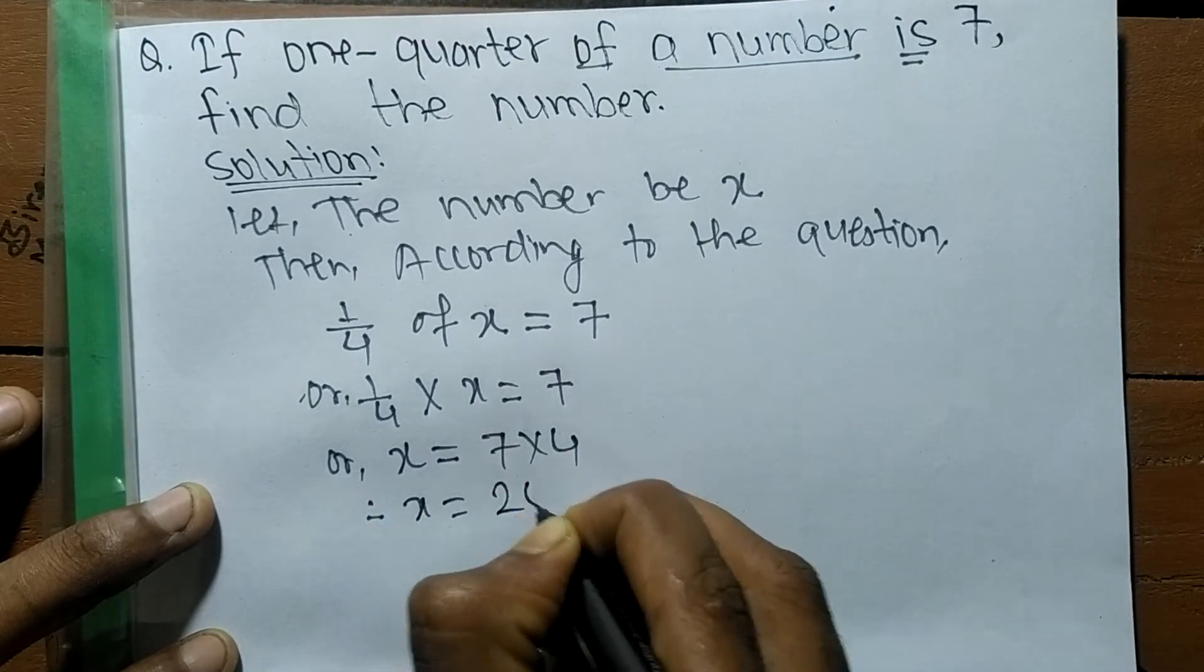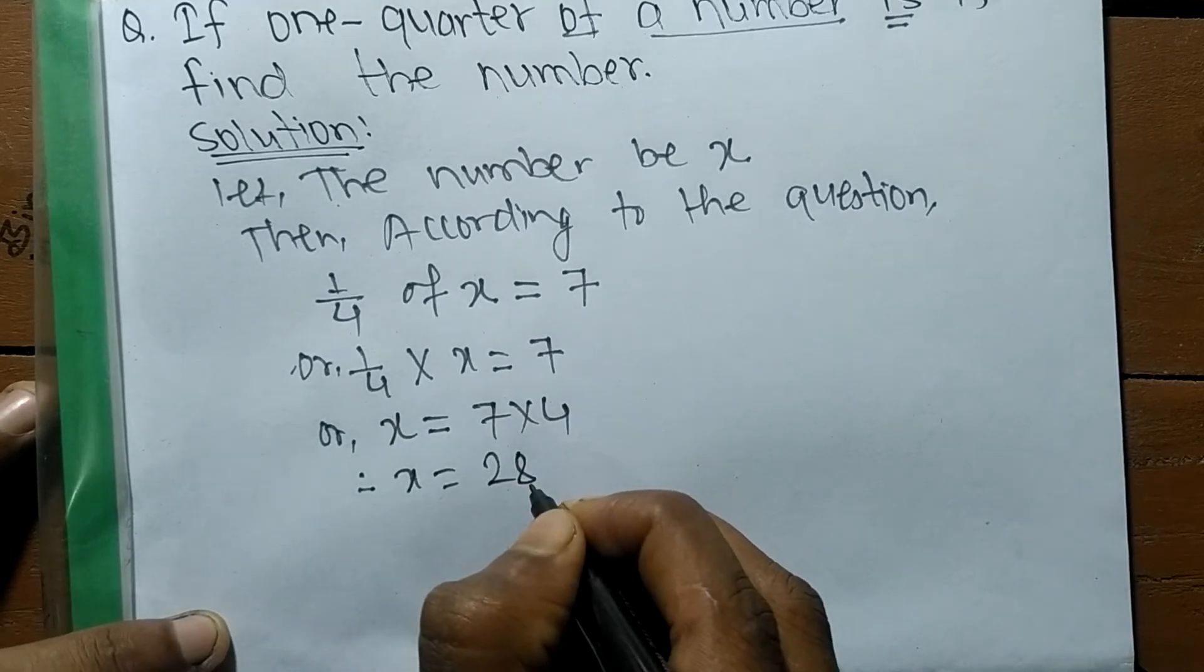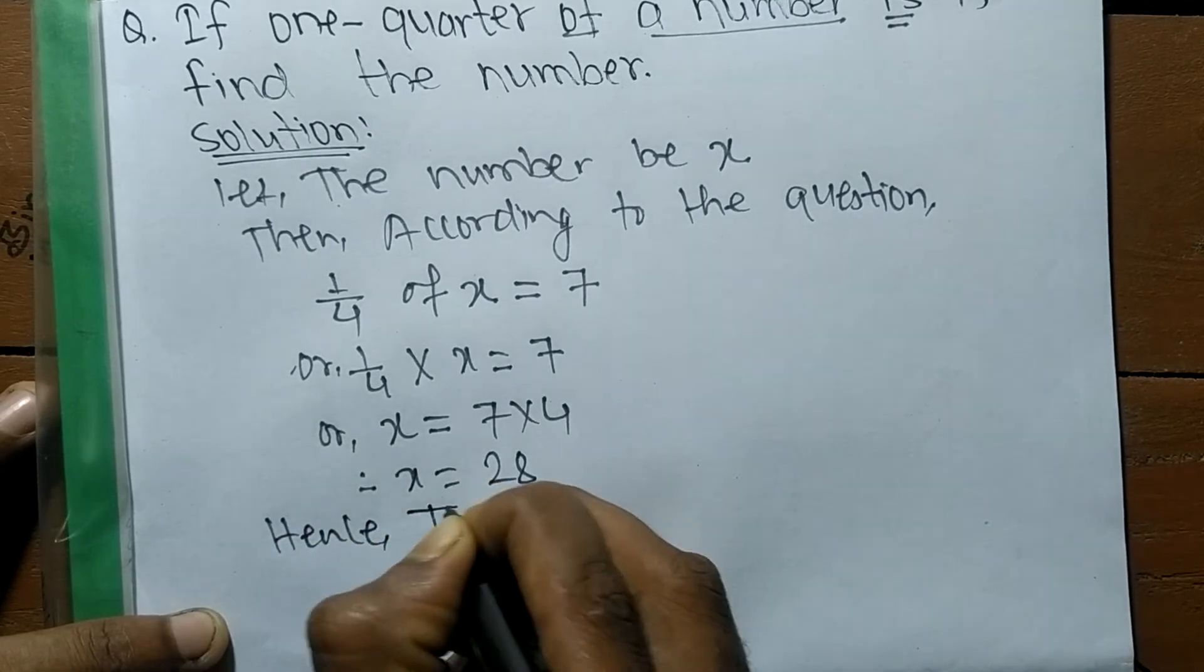Therefore, X is equal to 7 times 4, which means 28. So we got the value of X, which is our required number.